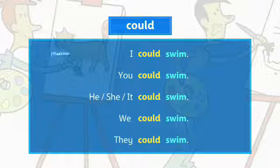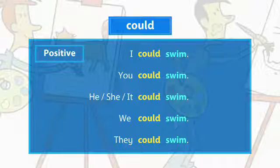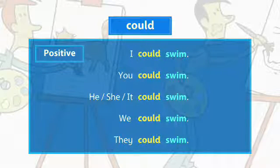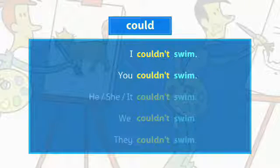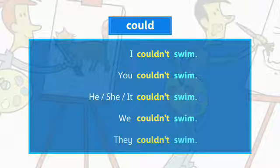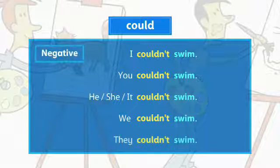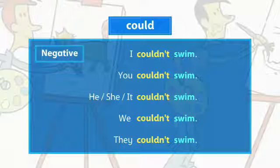We form positive sentences about ability in the past with could. We form negative sentences with couldn't, like this.